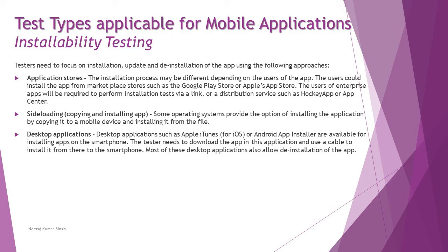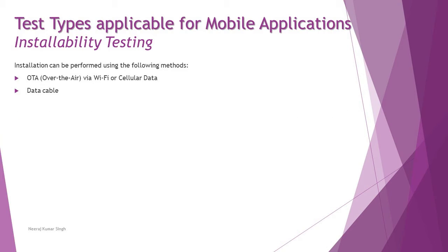The third option is desktop applications, such as Apple iTunes for iOS and an Android App Installer for Android, available for installing apps on the smartphone. The tester needs to download the app in this application and use a cable to install it onto the smartphone. Additionally, installation can be performed by two methods: OTA (Over The Air) via Wi-Fi or cellular data, or via data cable, where you pass installation commands from the system to the phone.